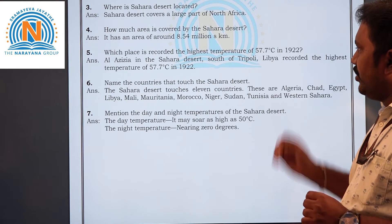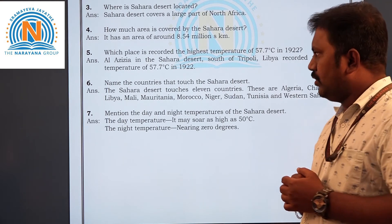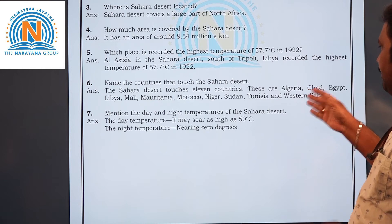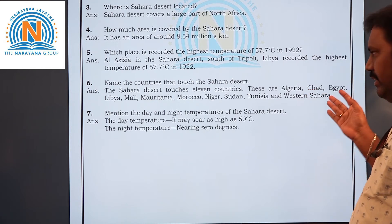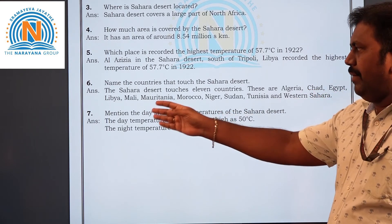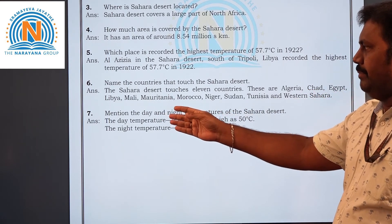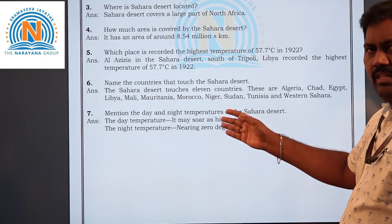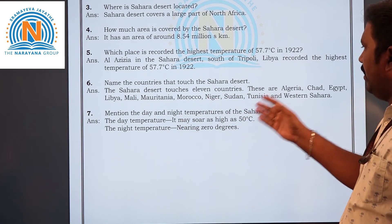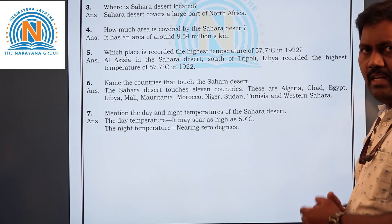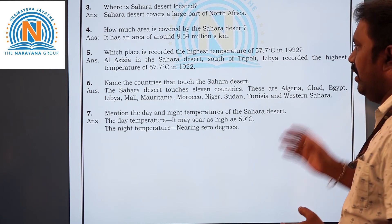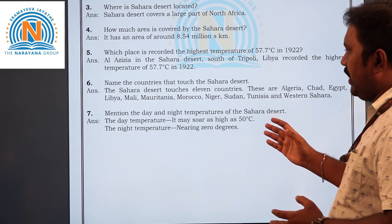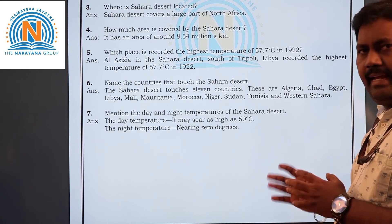Sixth question: Name the countries that touch the Sahara desert. The answer is: Algeria, Chad, Egypt, Libya, Mali, Mauritania, Morocco, Niger, Sudan, Tunisia, and Western Sahara. These are the countries that touch the Sahara desert.